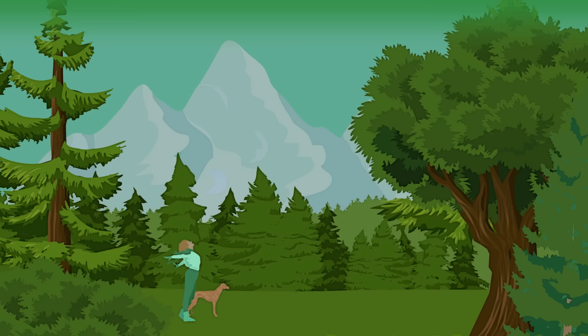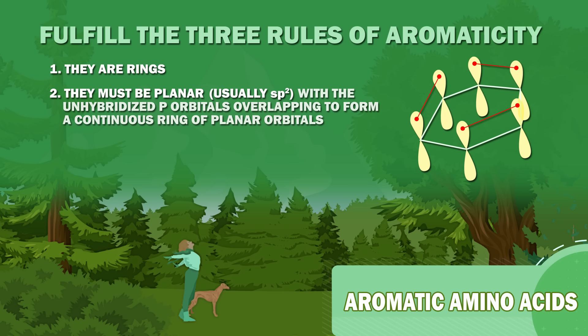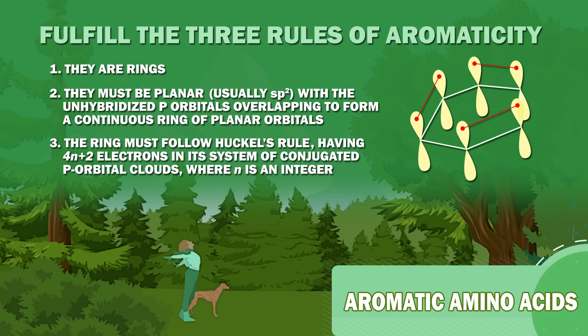Aromatic amino acids fulfill the three rules of aromaticity. They are rings. They must be planar, usually sp2 hybridized, with the unhybridized p orbitals overlapping to form a continuous ring of planar orbitals. The ring must follow Hückel's rule, having 4n+2 electrons in its system of conjugated p orbital clouds, where n is an integer.